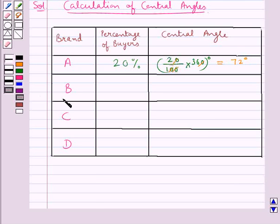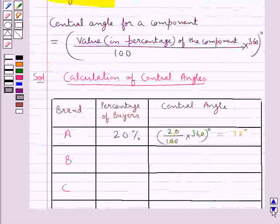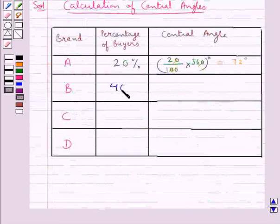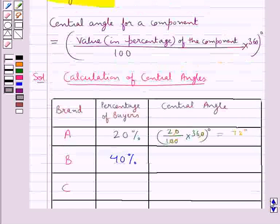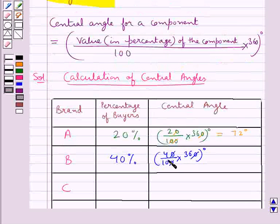For brand B, the percentage of buyers is 40%. Using the formula from the key idea, the central angle is given by 40 upon 100 into 360 degrees. Cancelling the zeros, we get 4 into 36, which equals 144 degrees.